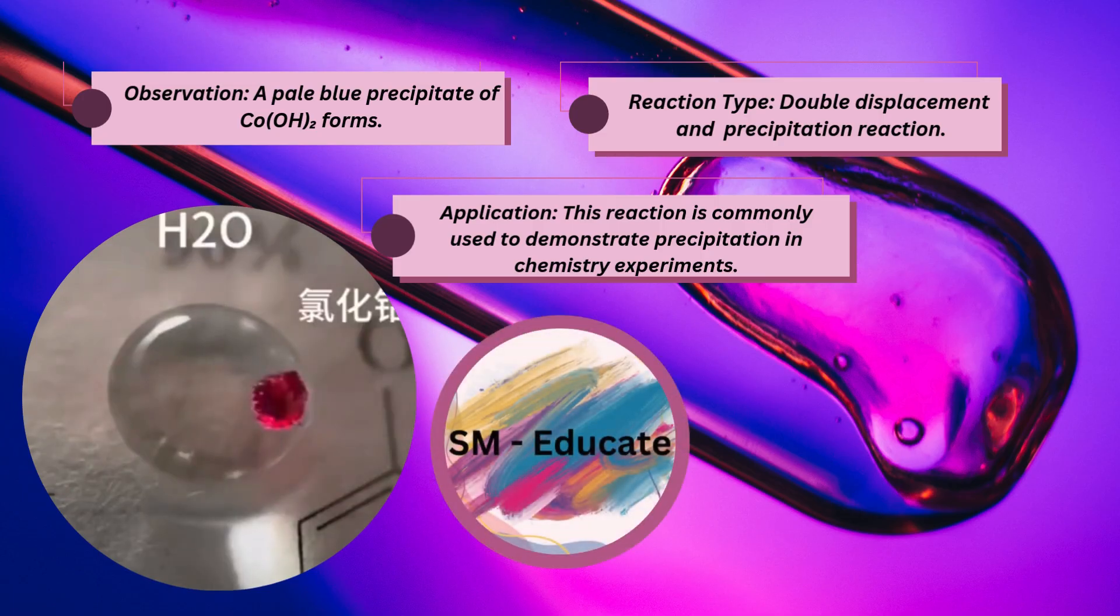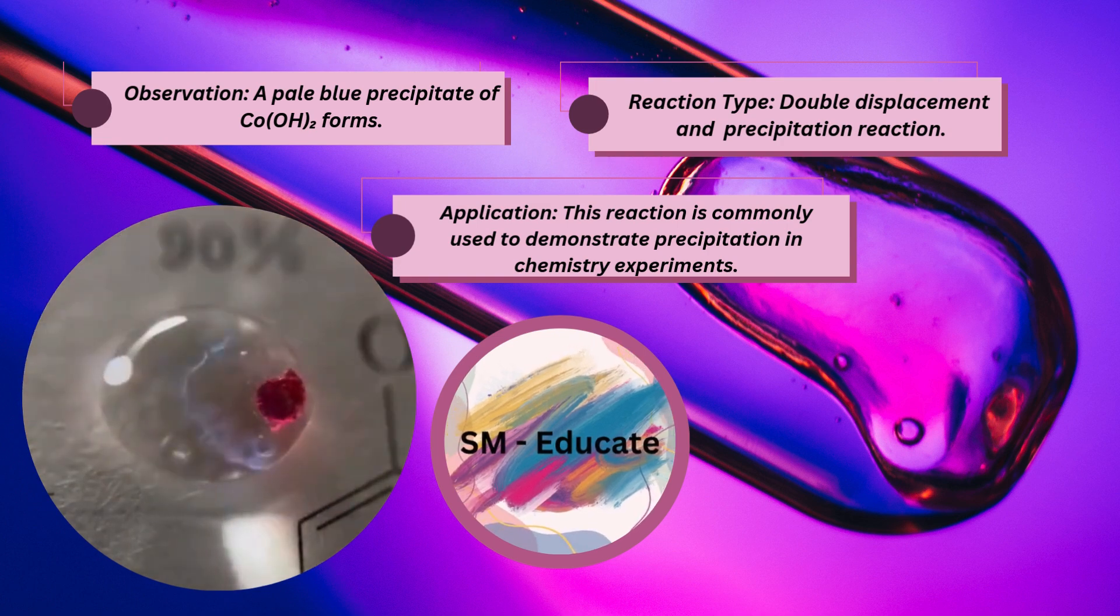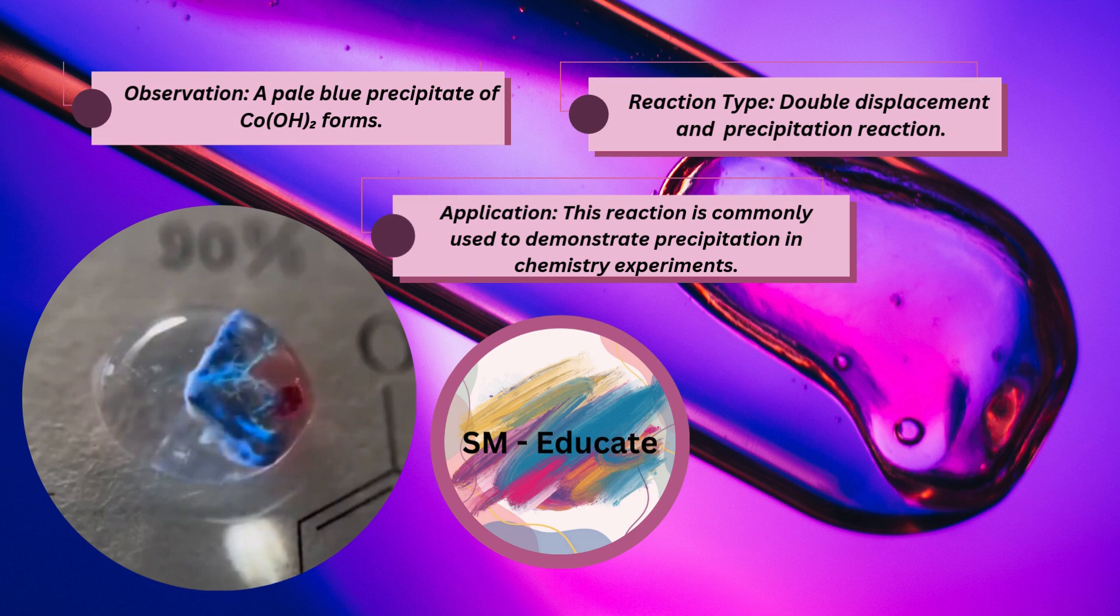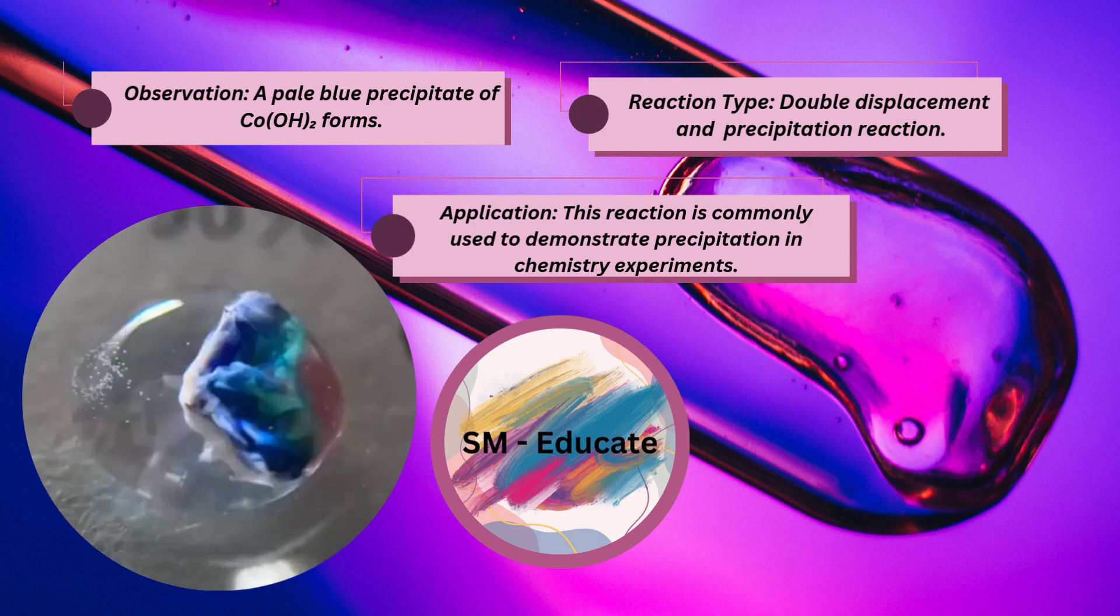Observation: A pale blue precipitate of Co(OH)2 forms. Reaction type: Double displacement and precipitation reaction. Application: This reaction is commonly used to demonstrate precipitation in chemistry experiments.